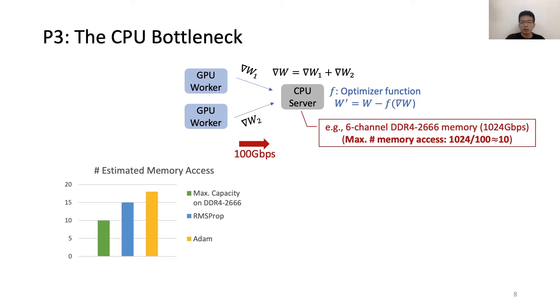Then we can calculate the maximum number of memory accesses to process the gradient flow is about 10 times. But in fact, many popular optimizers, including RMSProp and Adam, require memory accesses much more than 10 times. This indicates that the CPU can be a bottleneck for running the optimizers.